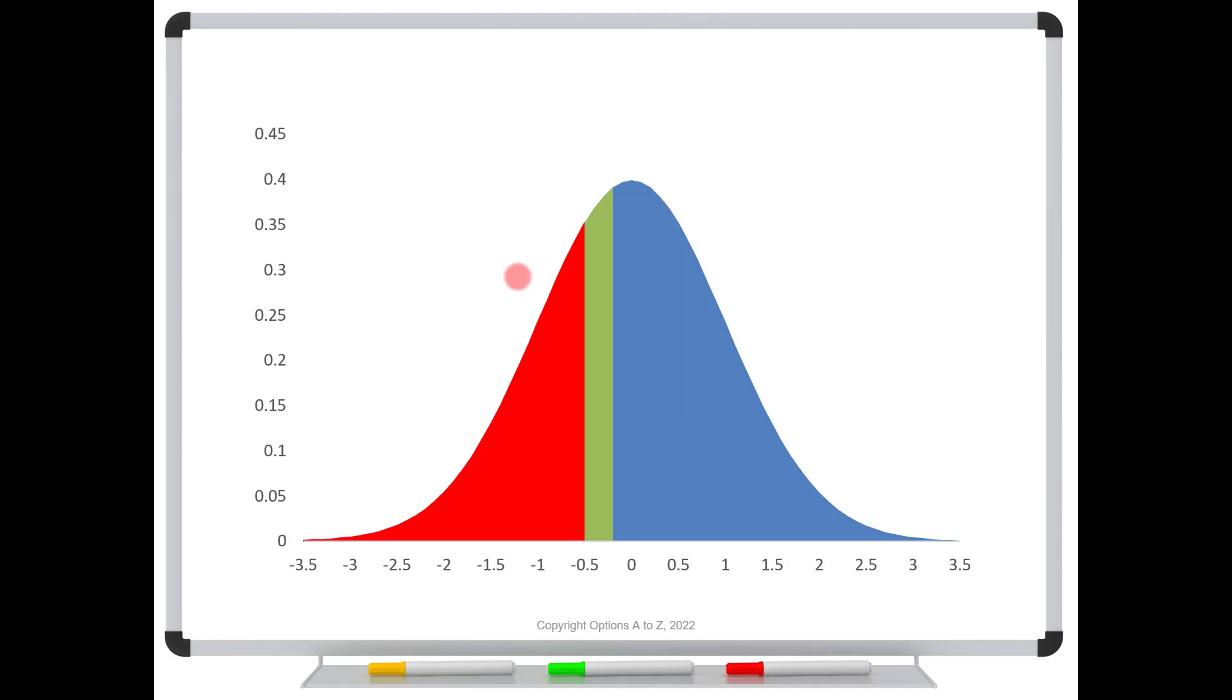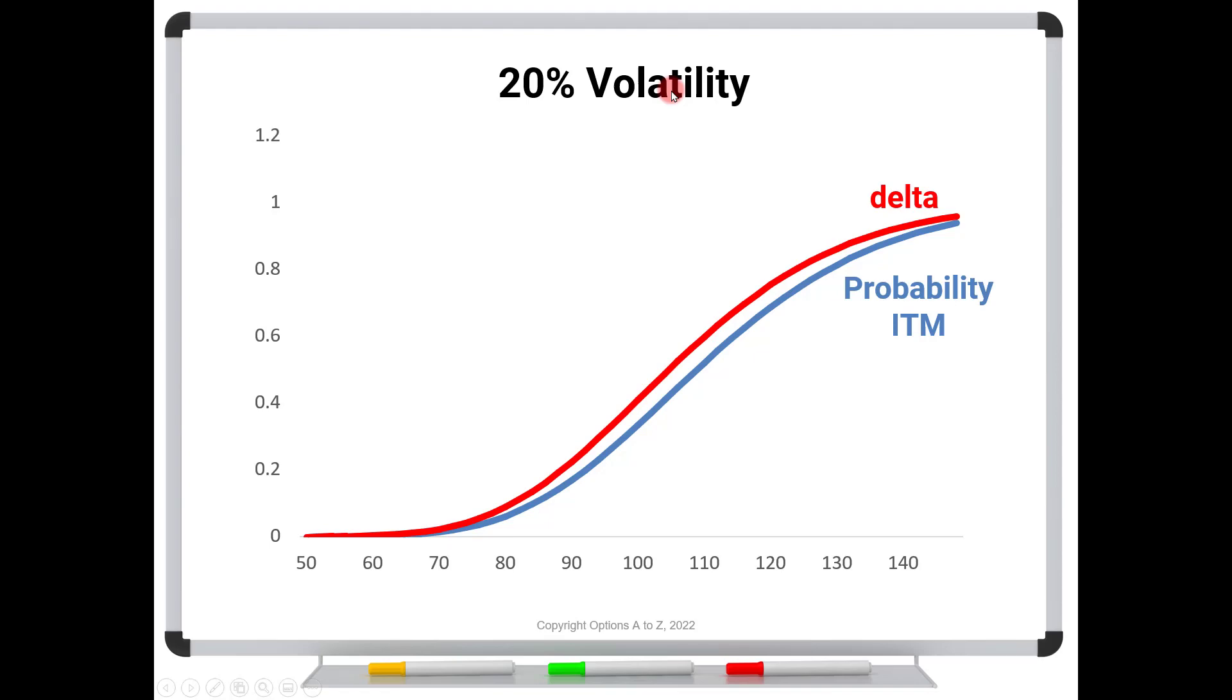Now, the problem is that this discrepancy grows with volatility. So let's take a look at 20% volatility. Here's different stock prices for those same parameters. This is the 110 call with a stock at 100. And we're just letting the stock price move, different stock prices. And the red line is the delta calculation, and the blue is the probability of going in the money. And you can see that the probability of going in the money is always less than delta. Delta will always overstate it.